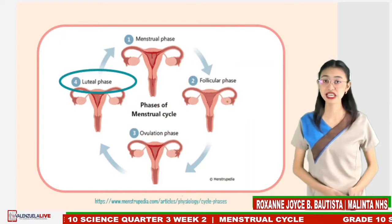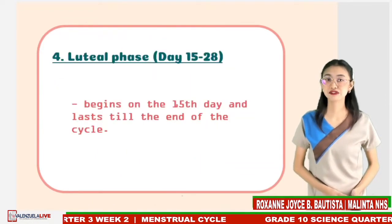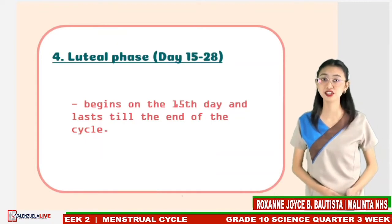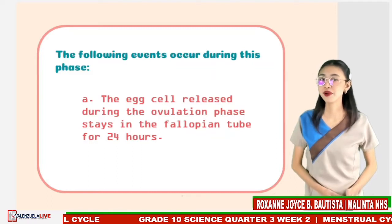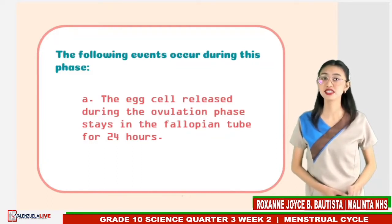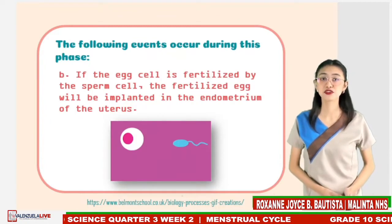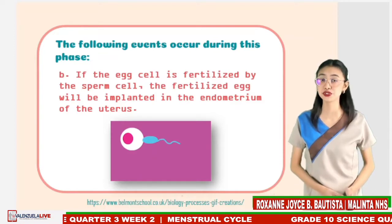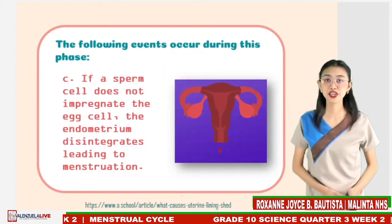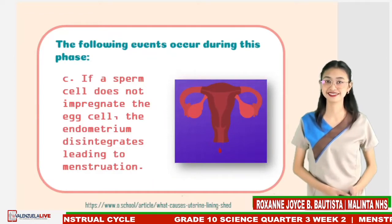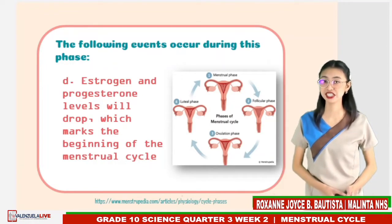The last phase of the menstrual cycle is known as the luteal phase. This phase begins on the 15th day and lasts till the end of the cycle. The egg cell released during the ovulation phase stays in the fallopian tube for 24 hours. If the egg cell is fertilized by the sperm cell, the fertilized egg will be implanted in the endometrium of the uterus. However, if a sperm cell does not impregnate the egg cell within that time, the endometrium disintegrates leading to menstruation. Both estrogen and progesterone levels will also drop, which will mark the beginning of a new menstrual cycle.